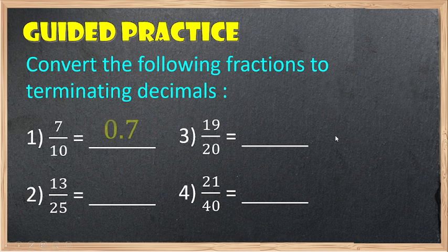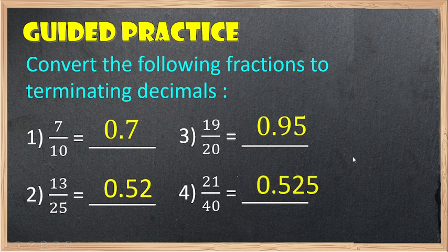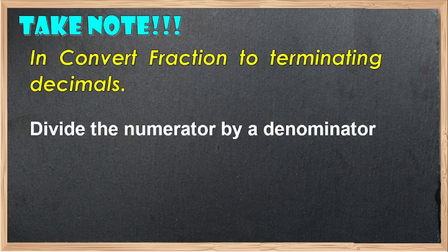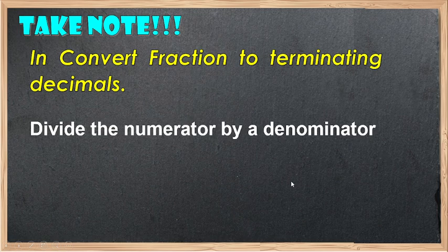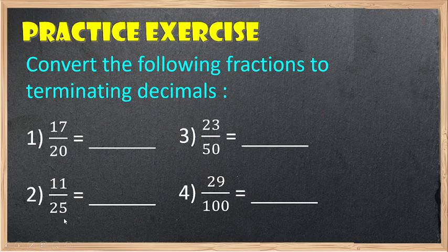For number 1, the answer is 0.7, or 7 tenths. For number 2, the answer is 0.52. For number 3, we have 0.95, or 95 hundredths. For number 4, we have 0.525. Very good, Grade 5 pupils! Take note: in converting a fraction to terminating decimal, always remember you need to divide the numerator by the denominator. For your practice exercises, convert the following fractions to terminating decimal and try to answer on your notebook. Number 1: 17 over 20. Number 2: 11 over 25. Number 3: 23 over 50. Number 4: 29 over 100.